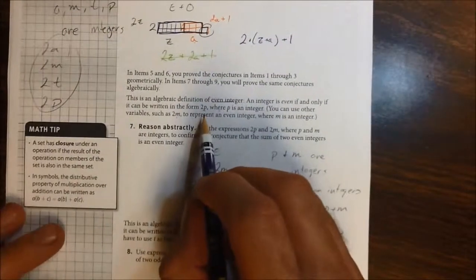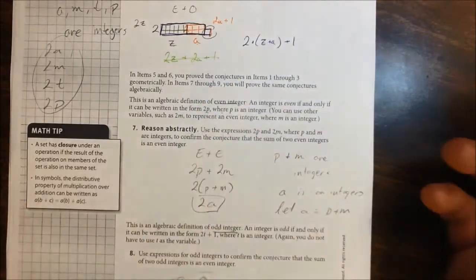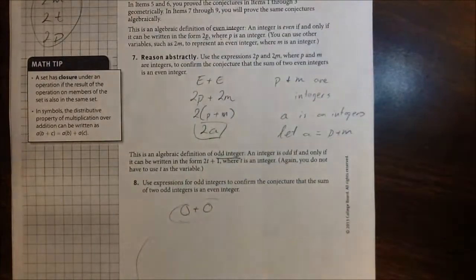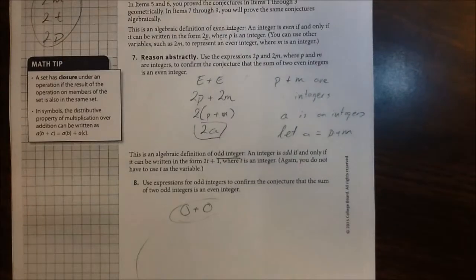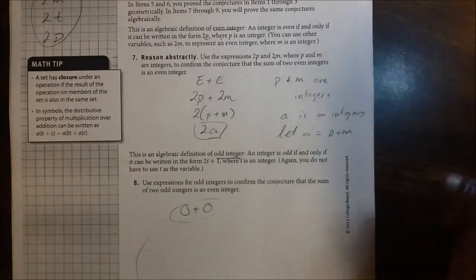Which is, by definition, 2 times p, where p is just an integer. Or 2 times t, or 2 times m, or 2 times a, or 2 times whatever variable you want, as long as that variable is an integer.